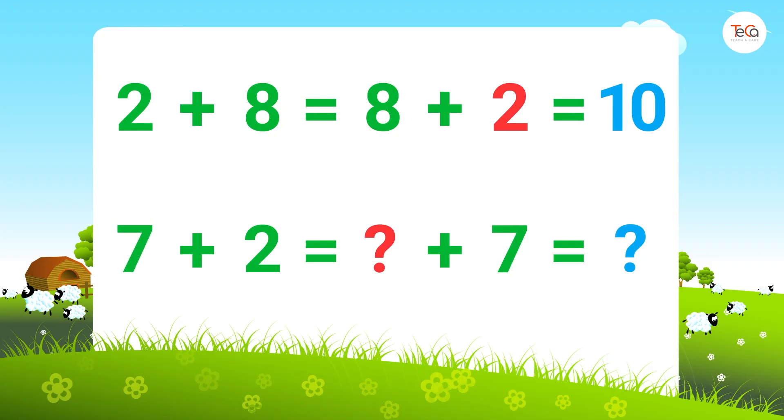7 + 2 is the same as 2 + 7. They both equal 9.